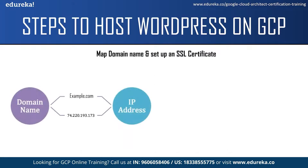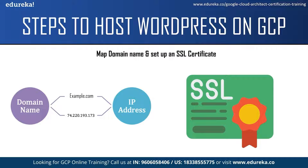Your site is only accessible via an IP address initially, so you will have to map a domain to the IP address. This step is important because visitors will prefer to enter a domain name rather than an IP address. You can register for a new domain name if you do not have one and link it to your WordPress website. Next, you have to set up an SSL certificate, which stands for Secure Socket Layer — a type of digital certificate that provides authentication for a website and enables an encrypted connection. This step is not mandatory but it is recommended.